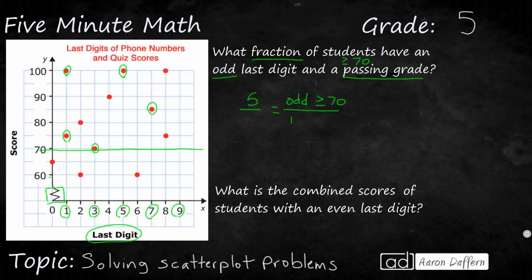Now our denominator is always going to be the total. So we need to include not just those that are odd that may or may not have passed, but any that we see on here at all. So 1, 2, 3, 4, 5, 6, 7, 8, 9, 10, 11, 12. So we've got 5 twelfths. Can we simplify that? No, we cannot. So our answer is 5 twelfths.